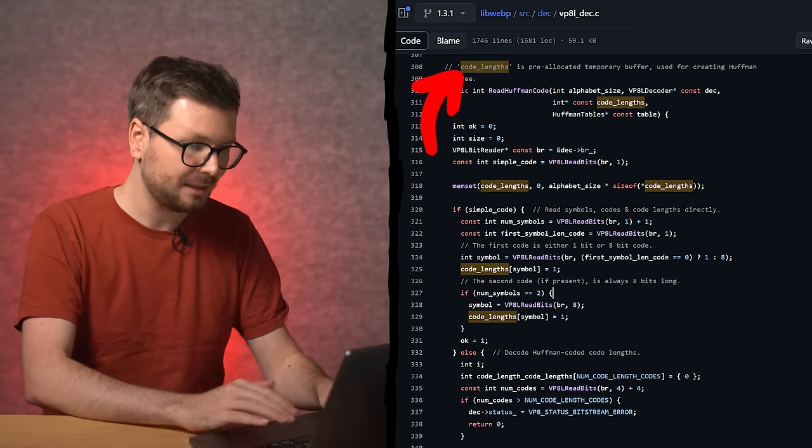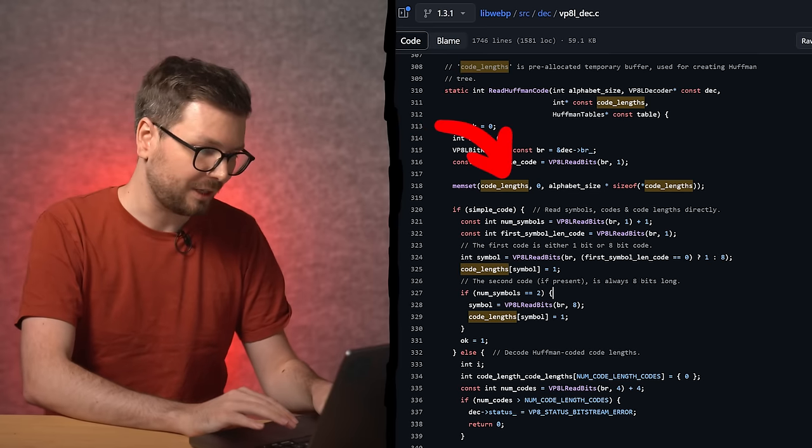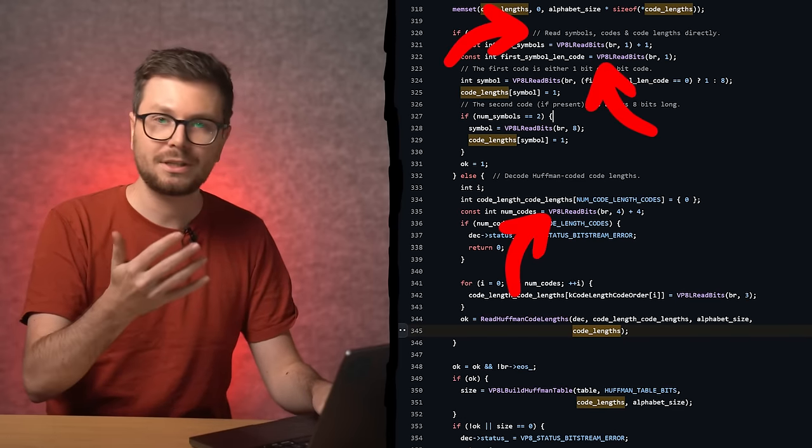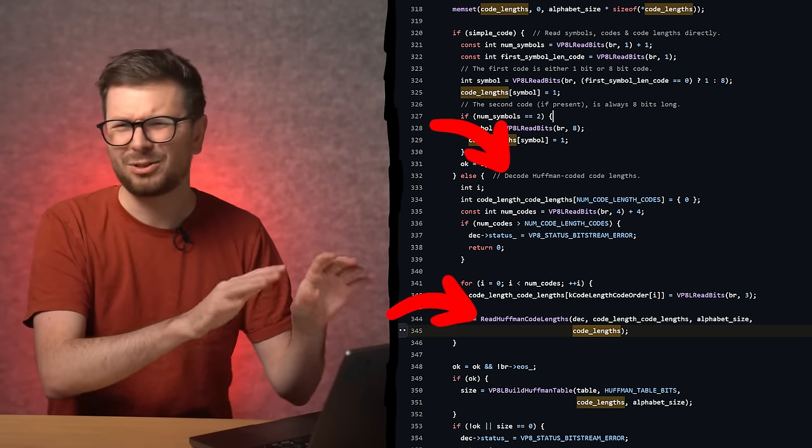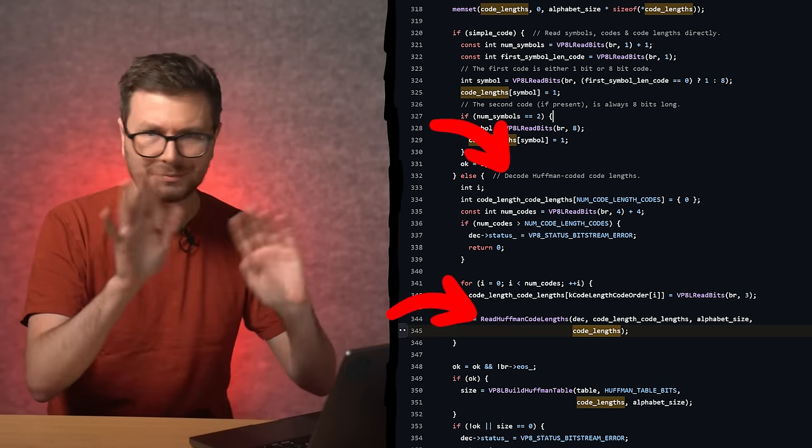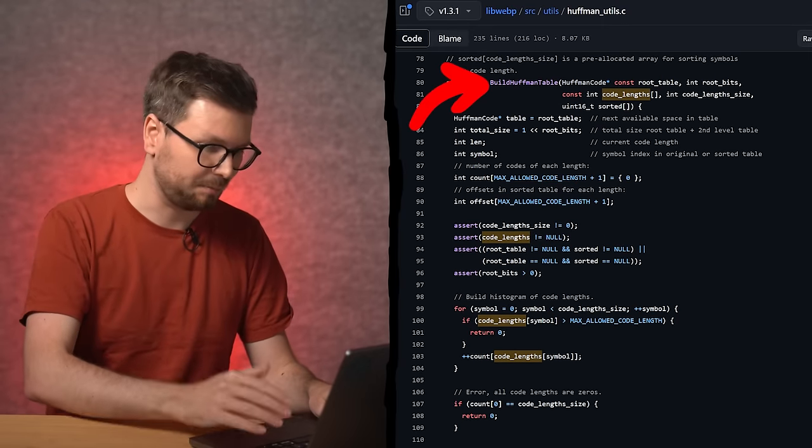And if we look at where this data is actually coming from, we see that it is basically coming straight from the webp file. Here this array is created, and we can see it is using VP8LReadBits, which is a helper function to read bits from the file. There is also another Huffman table involved, I believe this is to compress that array as well, but not that important. Let's again go to the place where then the table is built.